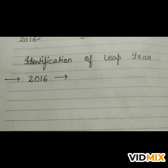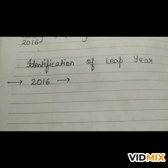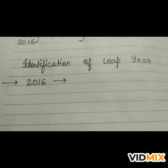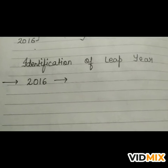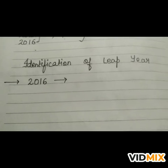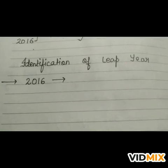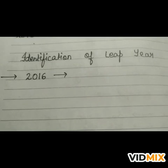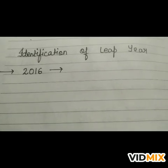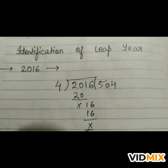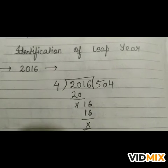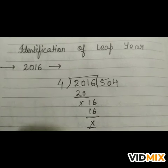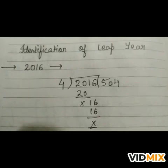I will tell you the easiest way to check whether a year is a leap year or not. Let us take the year 2016. If the particular year is fully divisible by 4 without leaving any remainder, then it is said to be a leap year. Year 2016 is fully divisible by 4 without leaving any remainder, so we can say that it is a leap year.